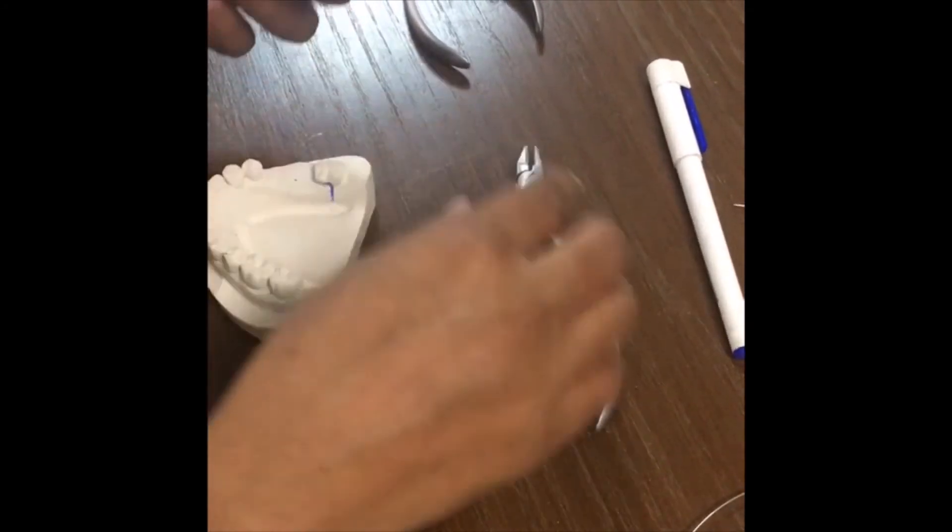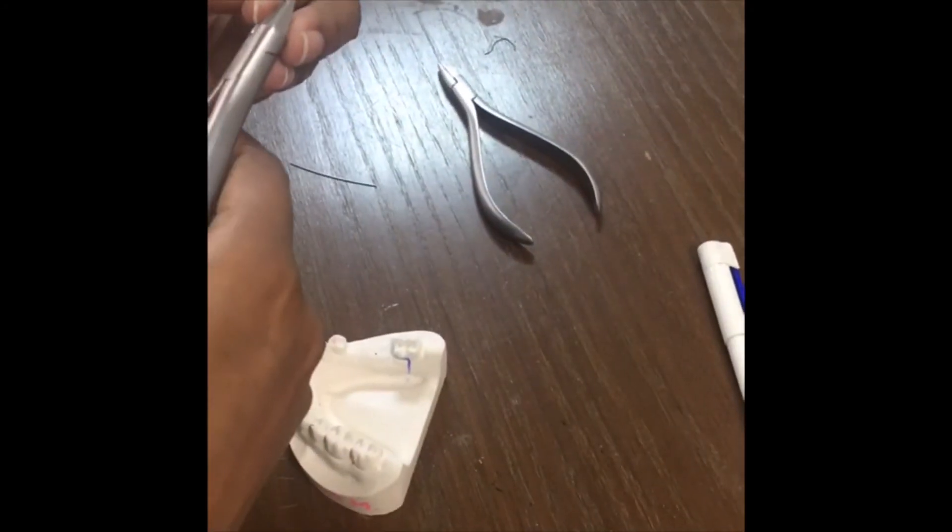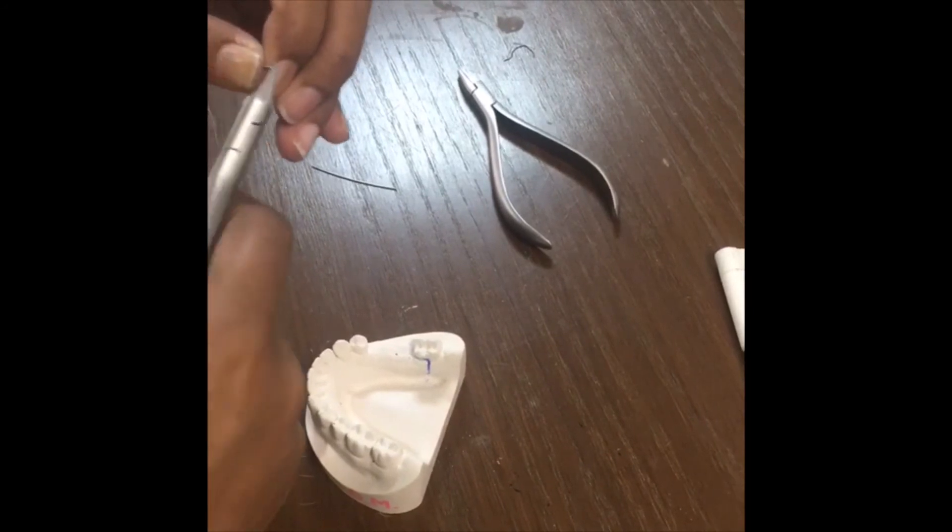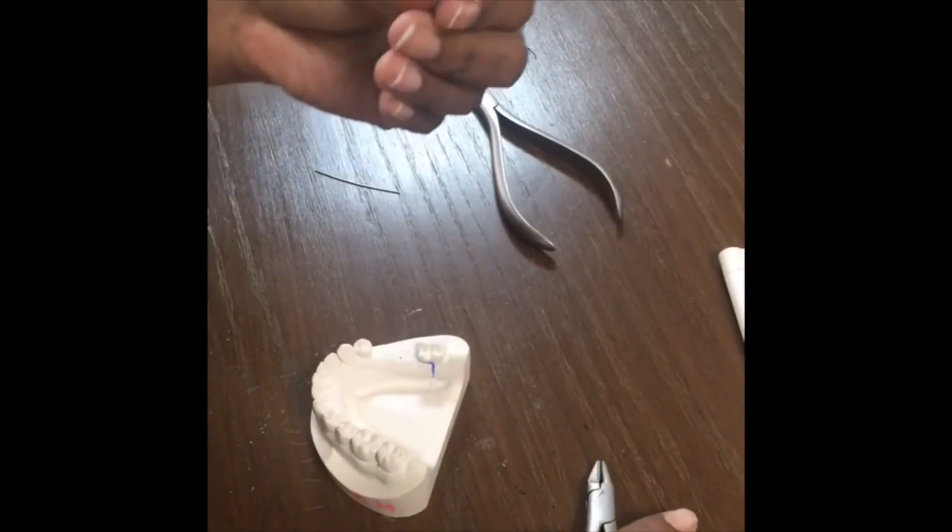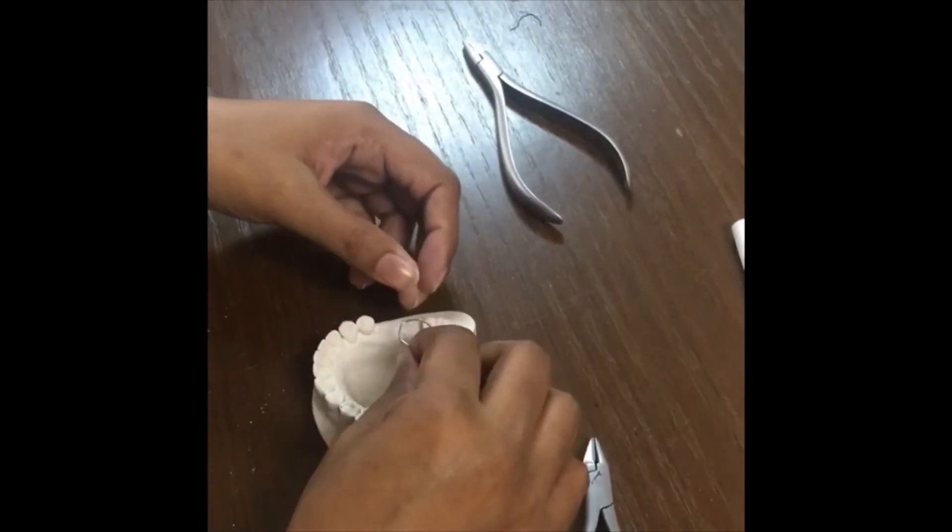And then last but not the least you have to turn the wire in the end a little bit at a right angle to the minor connector so that you can create the retentive tag.